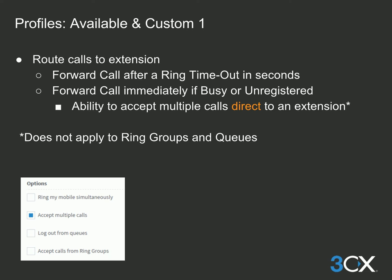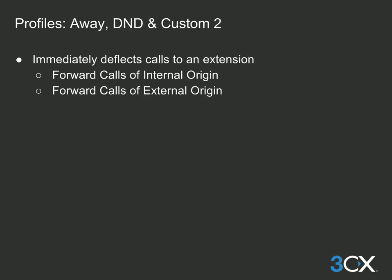A call will immediately be redirected when the extension is busy or unregistered. From the Available status forwarding rules, you can also configure the option to accept multiple calls. Note that this option does not apply to calls received via a ring group or call queue — the forwarding rule configuration is only valid for direct calls to the extension. Extensions in the Away, Do Not Disturb, and Custom Two profile states will have their calls immediately forwarded.